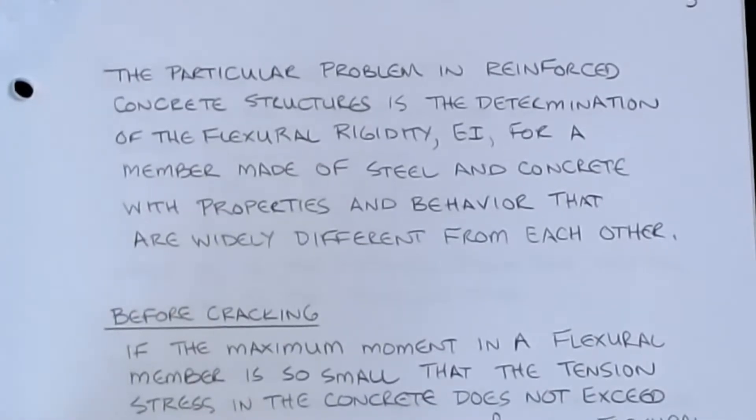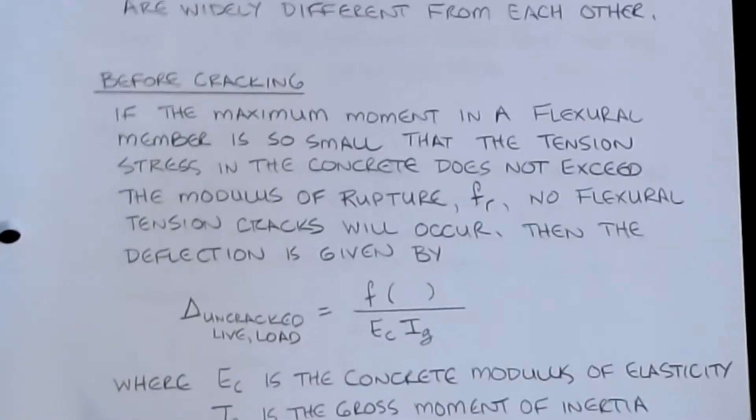Now, the particular problem in reinforced concrete structures is the determination of the flexural rigidity parameter, that EI, if you will, for a member made of steel and concrete with properties and behavior that are widely different from each other. Back when we were doing basic mechanics of materials, we assumed EI was constant and it was fairly easy to do. But now when we get into reinforced concrete, now it's a hybrid of two materials. And so we've got to worry about their interaction. We've talked a little bit about this when we did some of the cracking and curvature estimates, using I gross versus an I crack kind of parameter. Well, this all falls back in line with that kind of behavior. So EI becomes kind of an issue and it kind of becomes one of the centerpieces of the method that ACI is going to present to us.